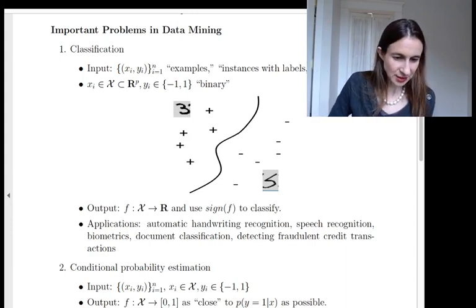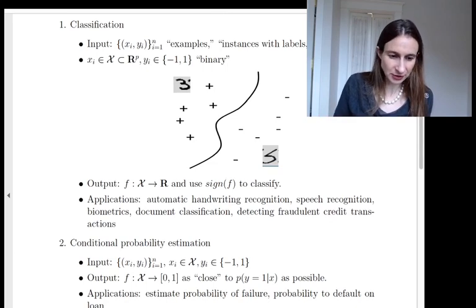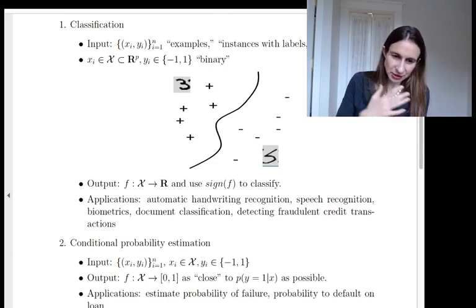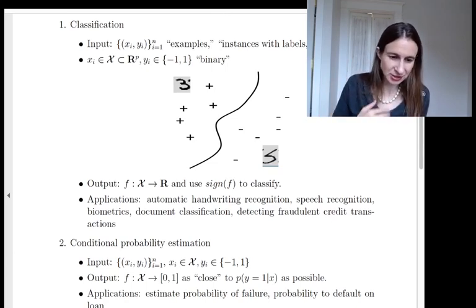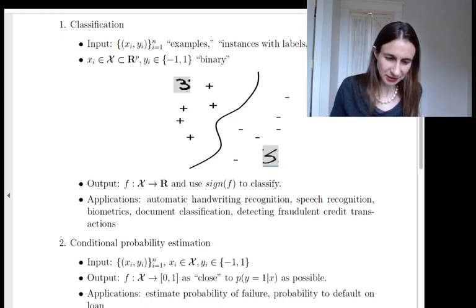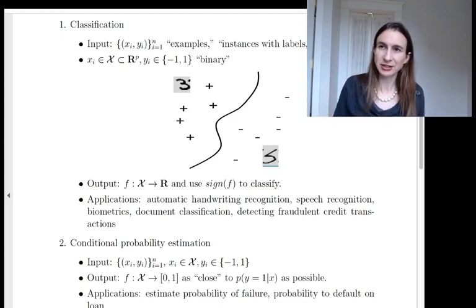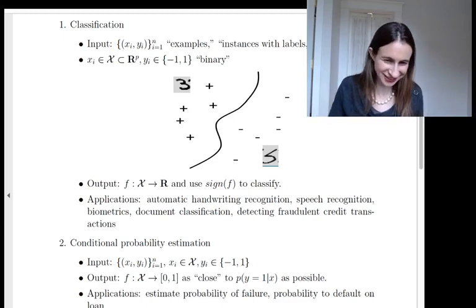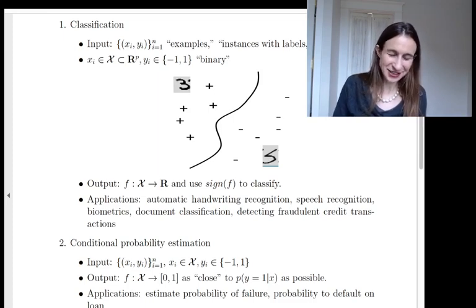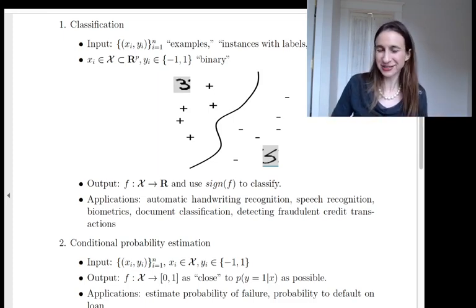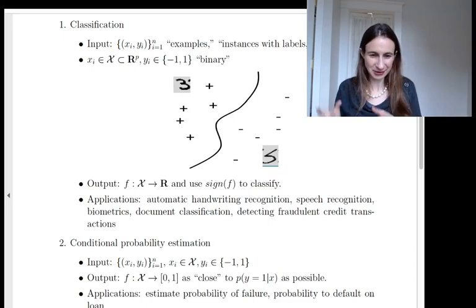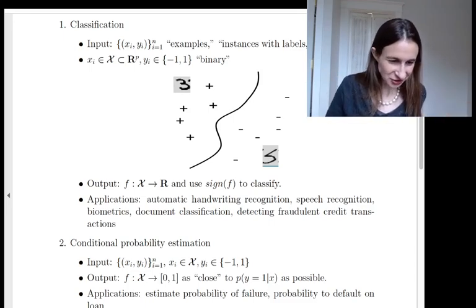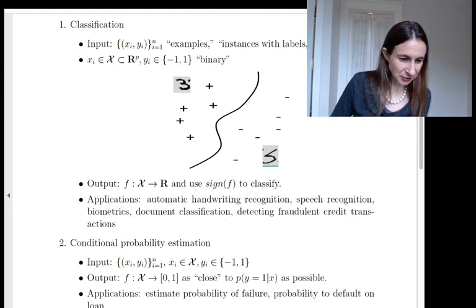And then you'd use the sign of that value of f to do the classification. And there are a huge number of possible applications, including handwriting recognition, speech recognition, and fingerprint recognition, and document classification. Is this a news article or is this an article about sports? Detecting credit card transactions that are fraudulent, and so on and so forth.